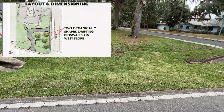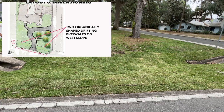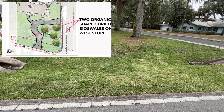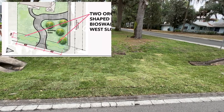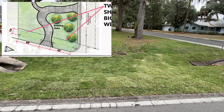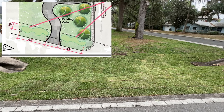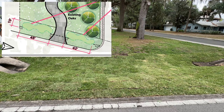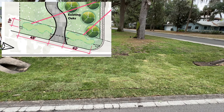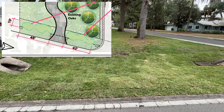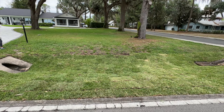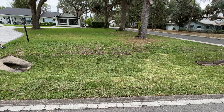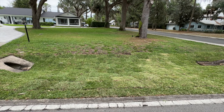Now let's go over layout and dimensioning. The two bioswales are going to have this organic shape. The northern one is going to be about 42 feet by 10 feet wide, and the southern one on the left side of the driveway is going to be about 48 feet long by 10 feet wide. These new bioswales are going to help the city — they recently came in to clear out these swales because they had been clogged up over the years. The new bioswales will help filter water and contaminants and keep erosion at bay so the city doesn't have to keep coming back to clear out the culverts.